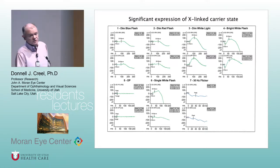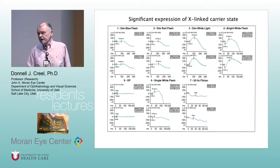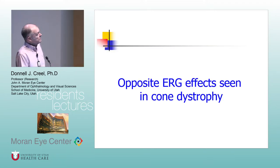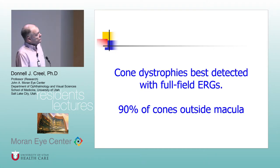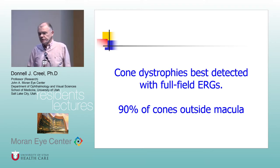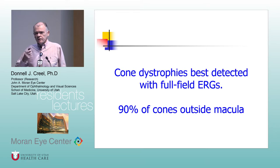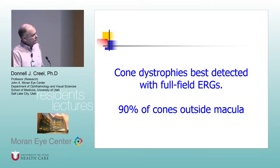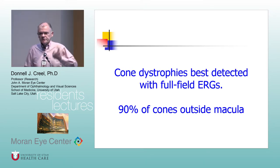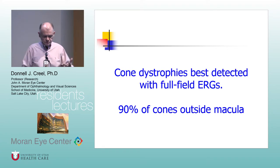The X-linked carrier state: X-linked female carriers can have a slight effect in their electroretinograms. Full-field ERGs are the best way to detect cone dystrophies — not multifocal. With multifocal, every disease that affects the cones or the macular area looks the same: AMD, cone dystrophy, Stargardt's — anything. So it's not good for separating cone dystrophies. What's good is the full-field ERG using the BX wave on the dim red, the 30 hertz flicker following, and the photopic single flash response.